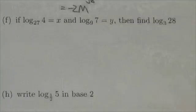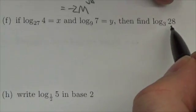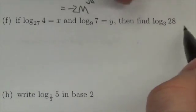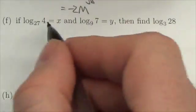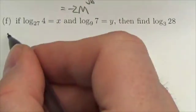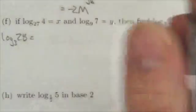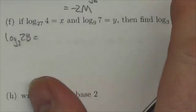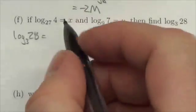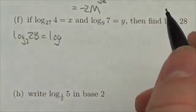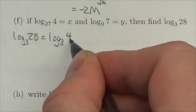Now normally what that requires me to do is take that log base 3 of 28 and split it up into the pieces 4 and 7. So the log base 3 of 28, I know that 28 is 4 times 7. So this is going to become, that product there, log base 3 of 4 times 7.